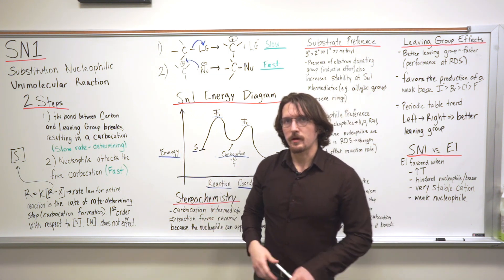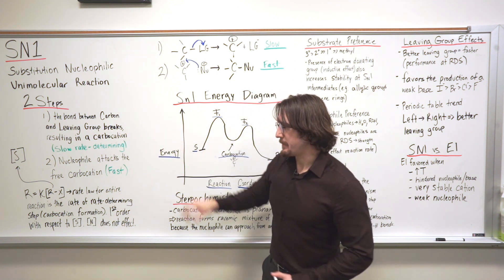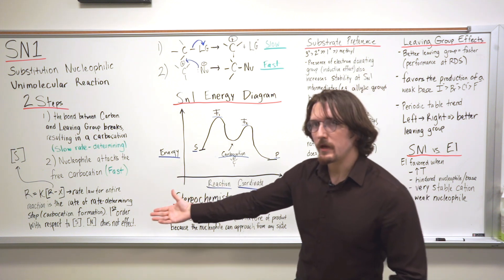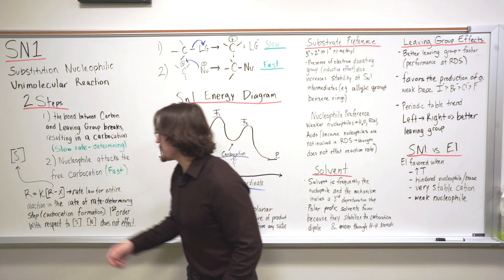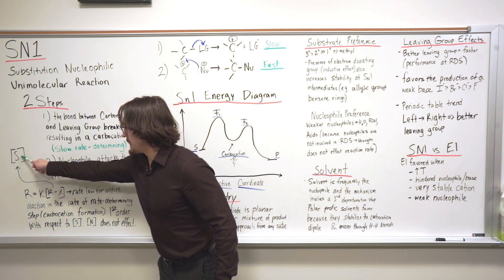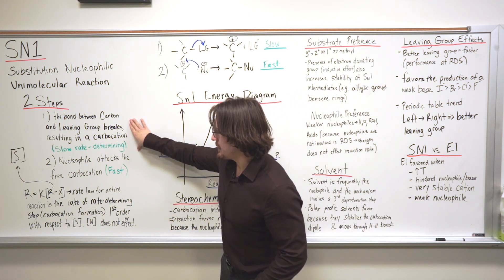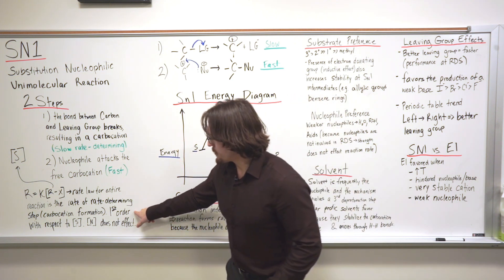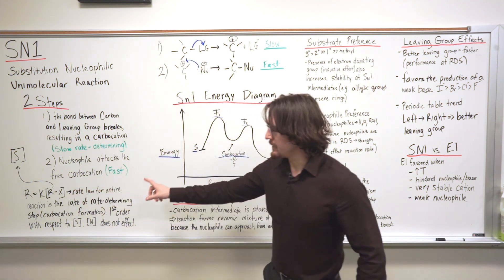Because the first step is rate determining, the rate law for the overall reaction is written using just the substrate — the molecule in that step. The rate of the reaction R equals K, the rate constant, multiplied by the concentration of RX, where R is the carbon chain bound to X, which is the leaving group. This can also be denoted as the substrate concentration, and it's the rate law for the entire reaction because the formation of the carbocation is the rate-determining step. This means the entire reaction is first order with respect to just the substrate.